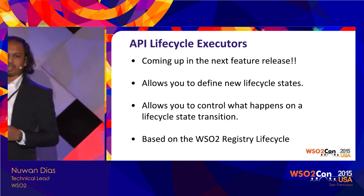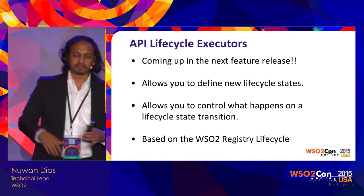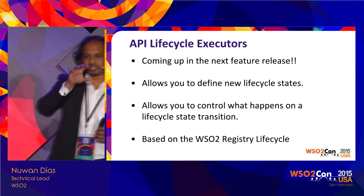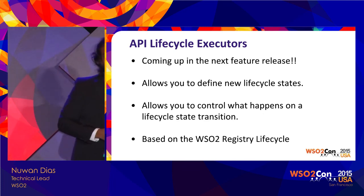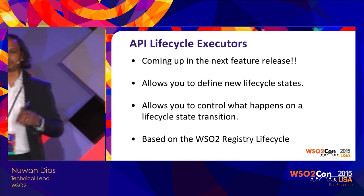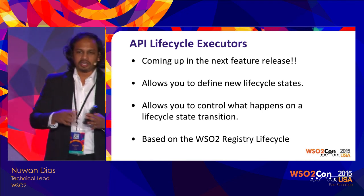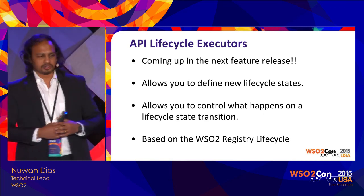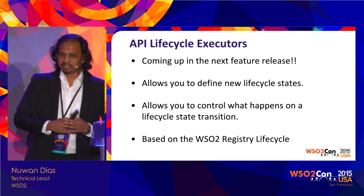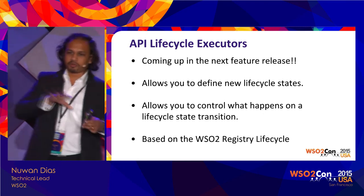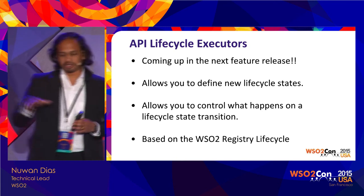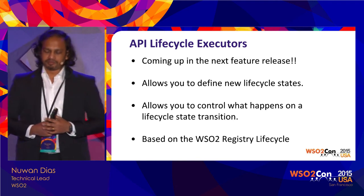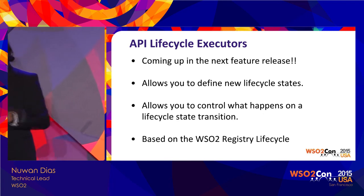This also enables API development governance. If you want an API to be created first, then published into dev, later into QA, and finally into production, you could define those lifecycle steps and ensure APIs are promoted and demoted accordingly. Even better, this gives you control over what happens when you publish — for example, if you want to publish to an external gateway, you could do that by controlling what happens in the lifecycle executor. We've had requests from customers asking how they can use the portal to publish to their existing gateway, and this will be the most straightforward way going forward.